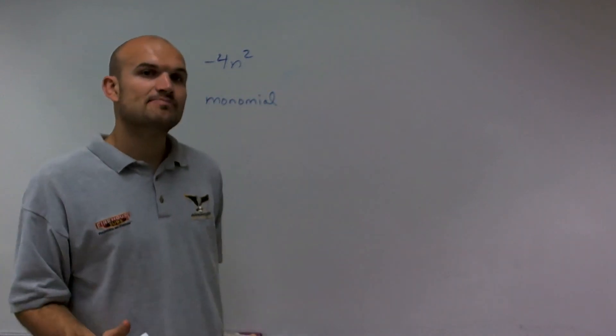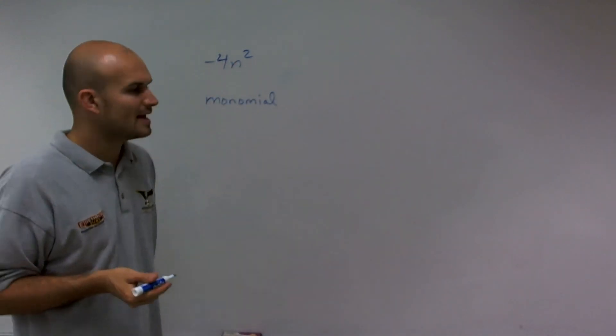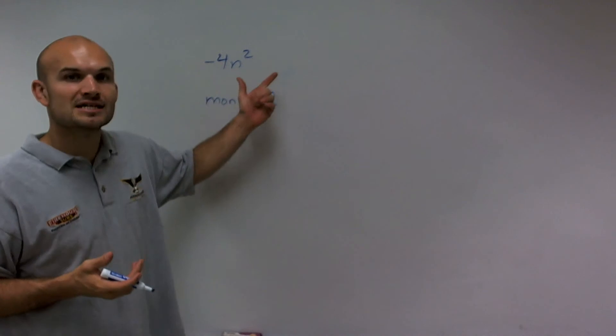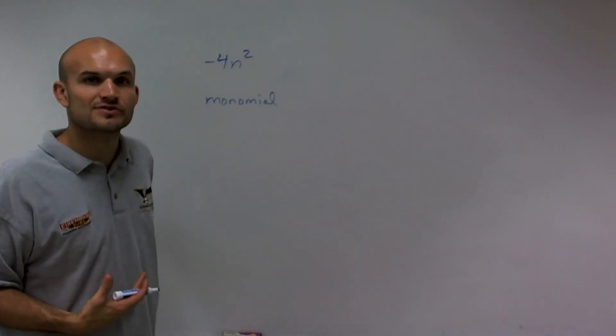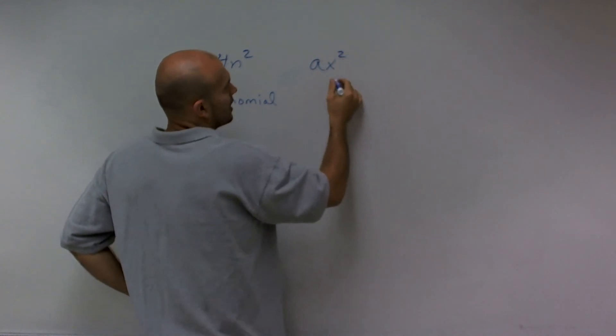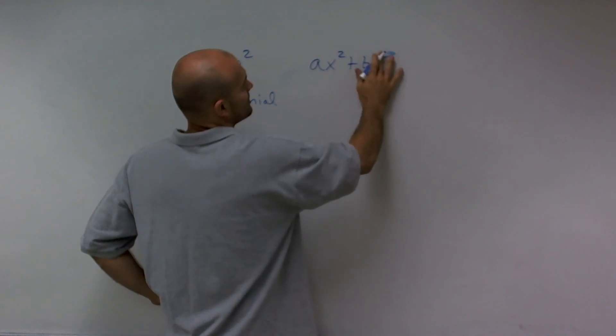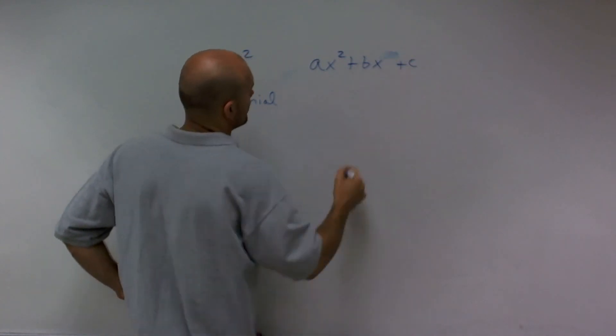But it's a very special type of monomial, because we look at the degree. The degree is going to be your exponent, and I see that this has a degree of 2. When we talk about polynomials with degree of 2, we want to see, can we write them in quadratic form?